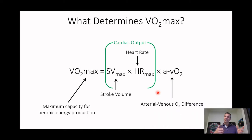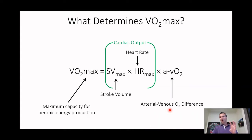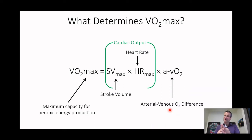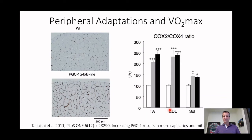The second thing that determines the a-vO2 difference is that once you get blood into the muscle with oxygen, you need mitochondria in order to use that oxygen. So the two things we're going to adapt on the periphery are our blood vessels and our mitochondrial mass. We're also going to increase fat oxidation enzymes and other things, but the key things for VO2 max are increasing blood vessels through angiogenesis for more oxygen delivery, and increasing mitochondrial mass to use that oxygen to produce energy.